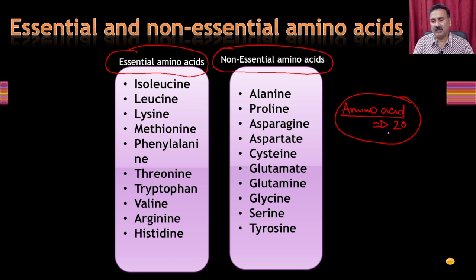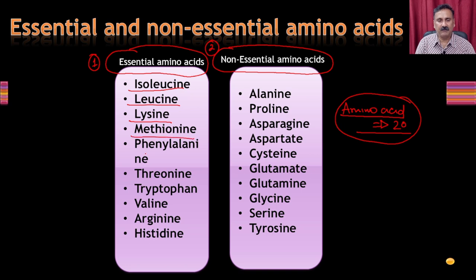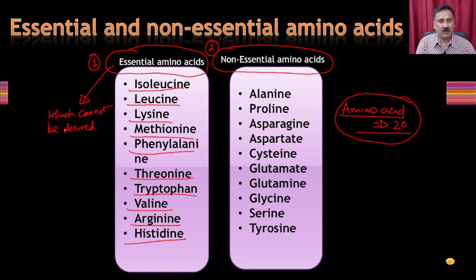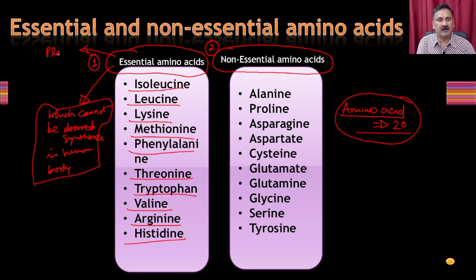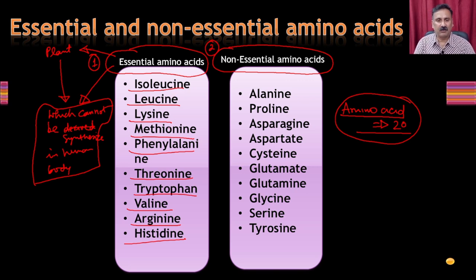All 20 naturally occurring amino acids can be categorized into two categories. One is called essential amino acids and the other is called non-essential amino acids. Essential amino acids include isoleucine, leucine, lysine, methionine, phenylalanine, threonine, tryptophan, valine, arginine, and histidine. Essential amino acids cannot be synthesized in the human or animal body — they are synthesized in plants and received by humans through diet. Therefore, we do not have the synthesis pathways for these amino acids.